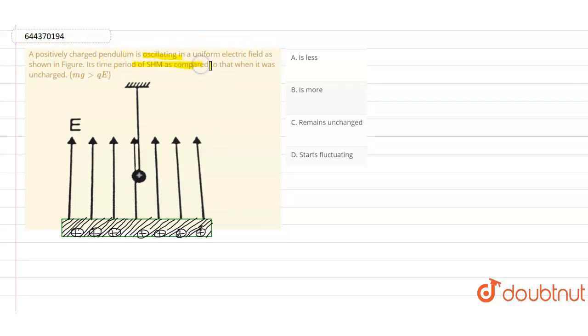Of simple harmonic motion as compared to that when it was uncharged, and mg will be greater than qE. So here q is the charge and E is the electric field.